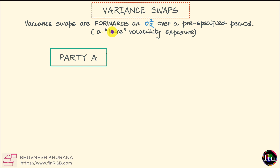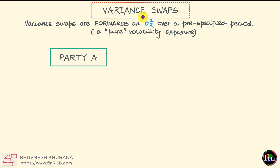Unlike swaps as we know and understand them, variance swaps do not have multiple settlements. They have a single settlement, much like a forward contract. Variance swaps essentially involve an exchange of realized variance with a fixed or strike variance.